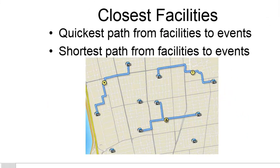Another type of problem in network analysis is called the closest facility problem. It's sort of a multiple new route problem where we have more than one route. In this example, we might have fire stations and three fires going on in the city, and we want to respond to each fire with either the quickest path or the shortest path to get from a fire station to the fire event. This is called the closest facilities problem.